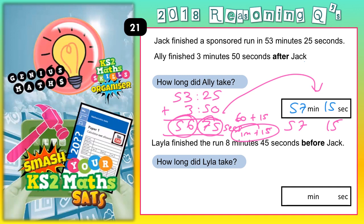The second part of the question: Layla finished the run 8 minutes 45 seconds before Jack. How long did Layla take? Again, we'll try it two ways, starting with a timeline. Since she finished before Jack, we subtract 8 minutes 45 seconds from 53 minutes 25 seconds. Starting at 53 minutes 25 and counting backwards, we take off the 8 minutes first — 53 take away 8 brings us down to 45 minutes 25.